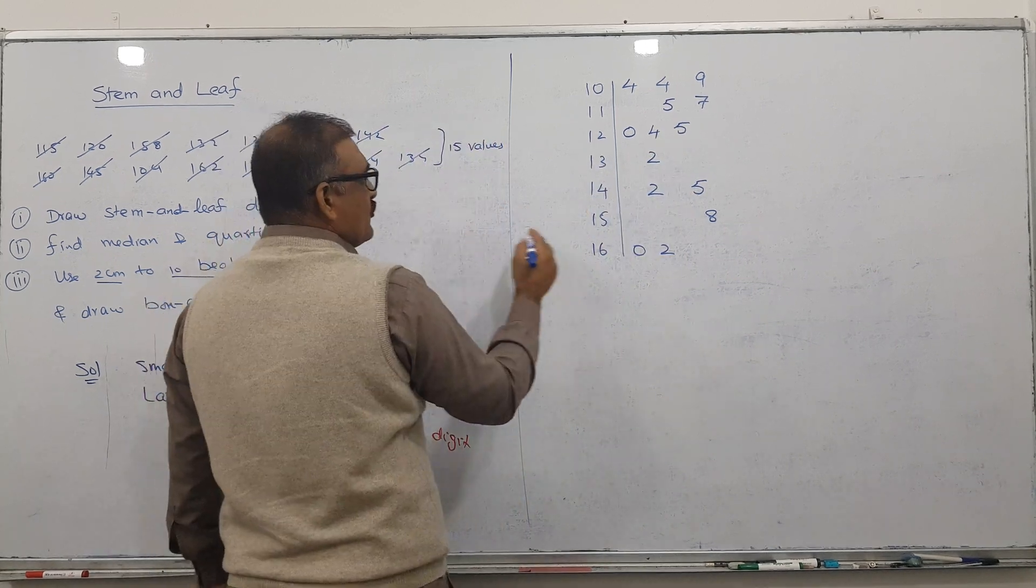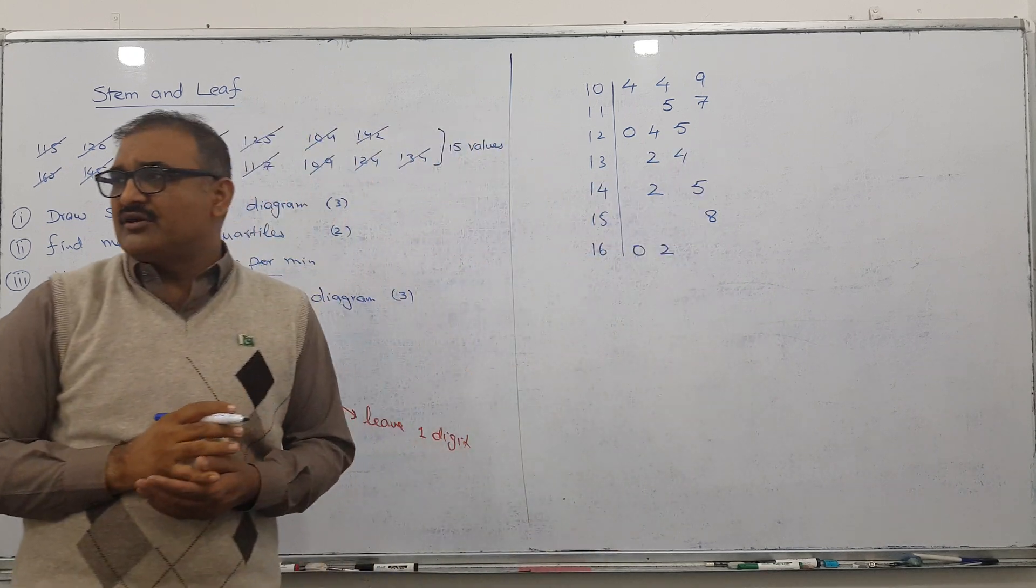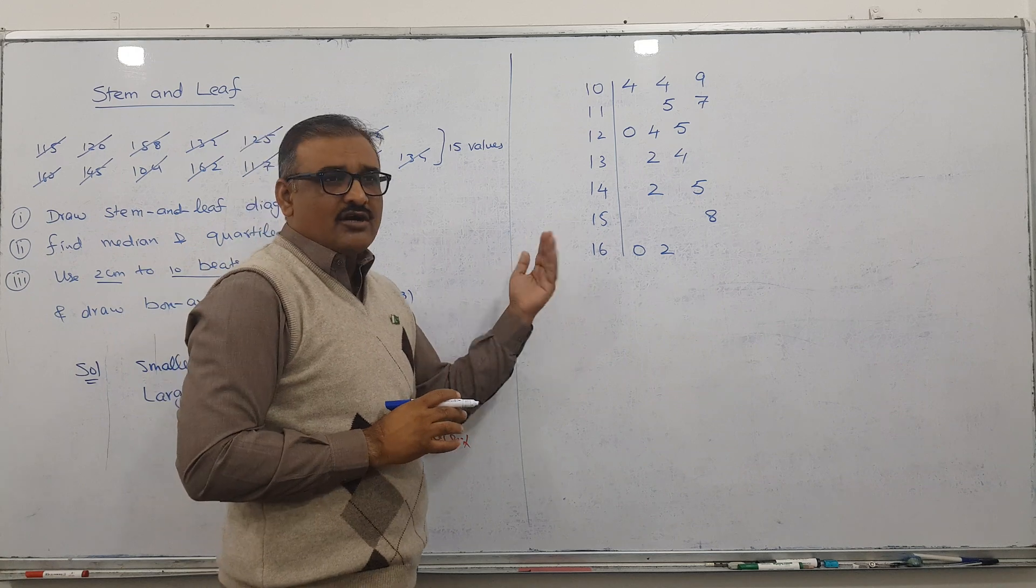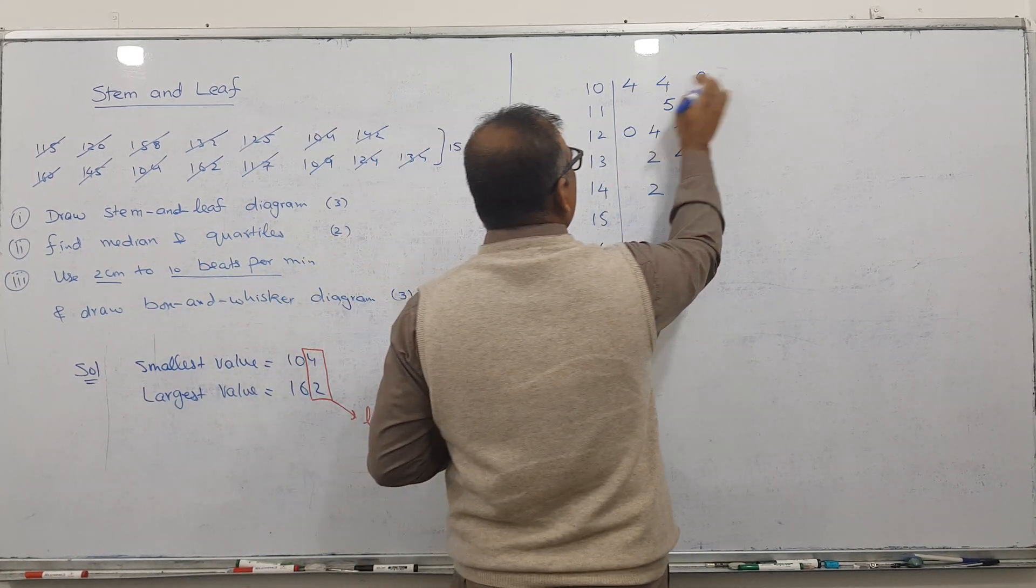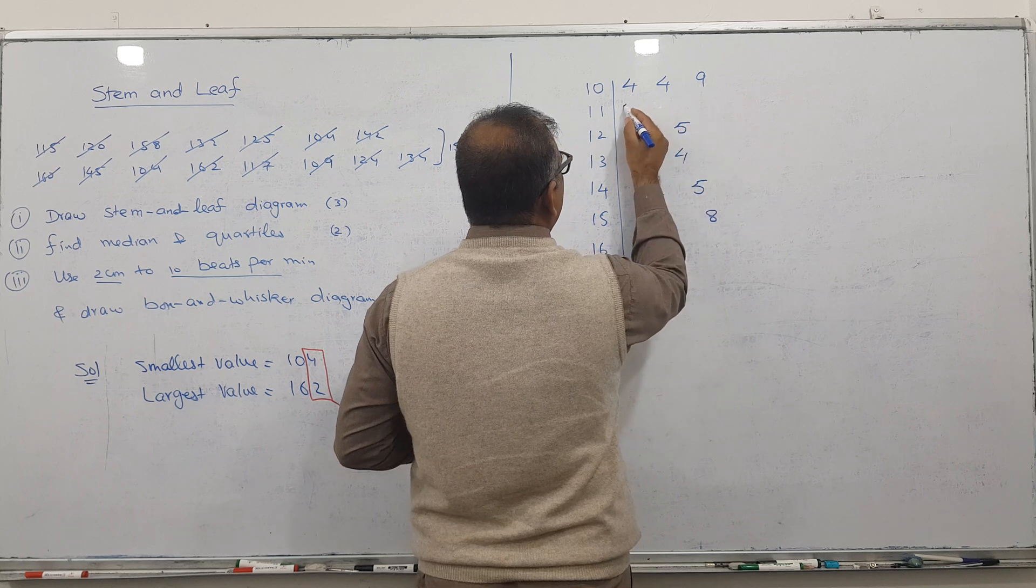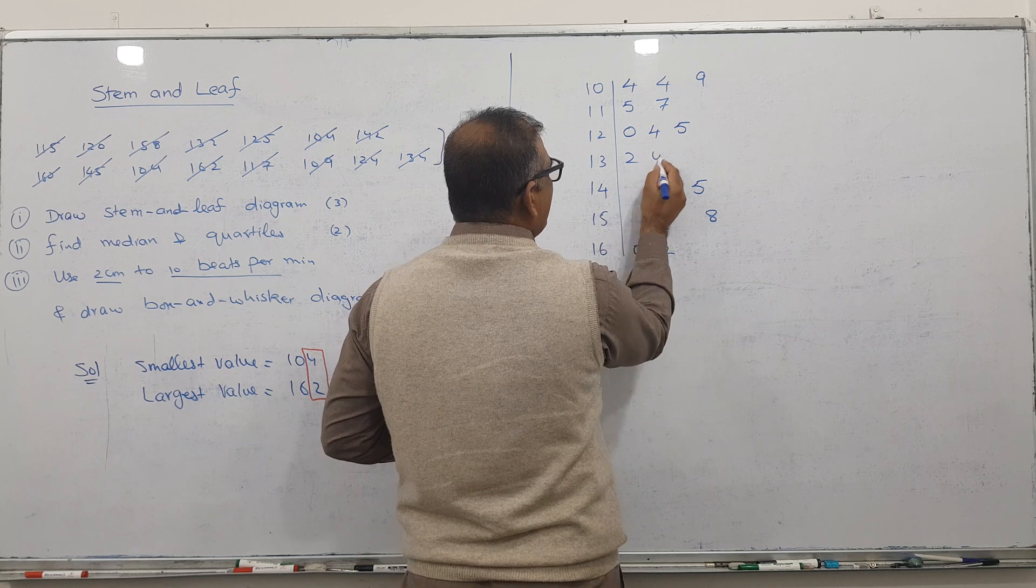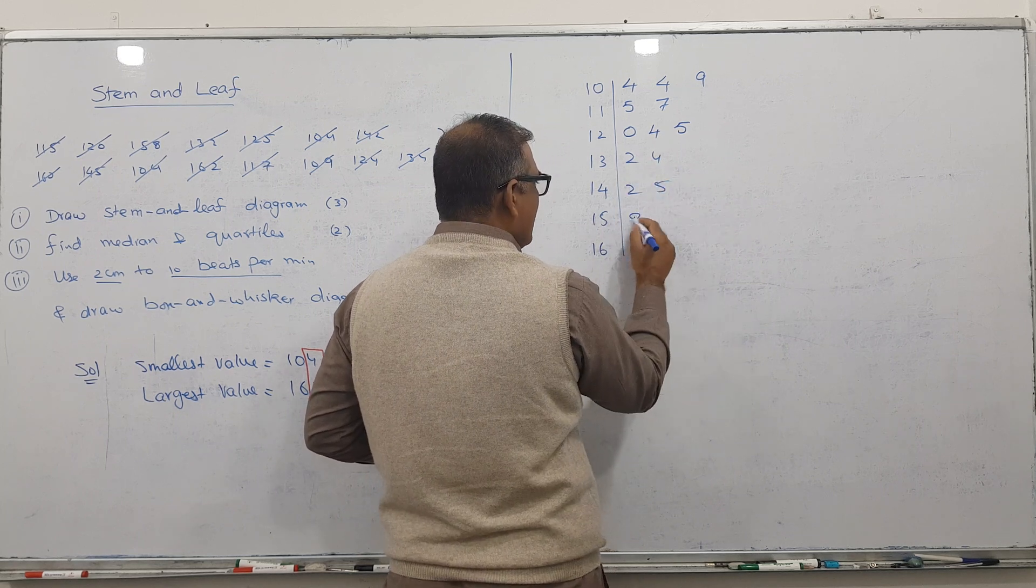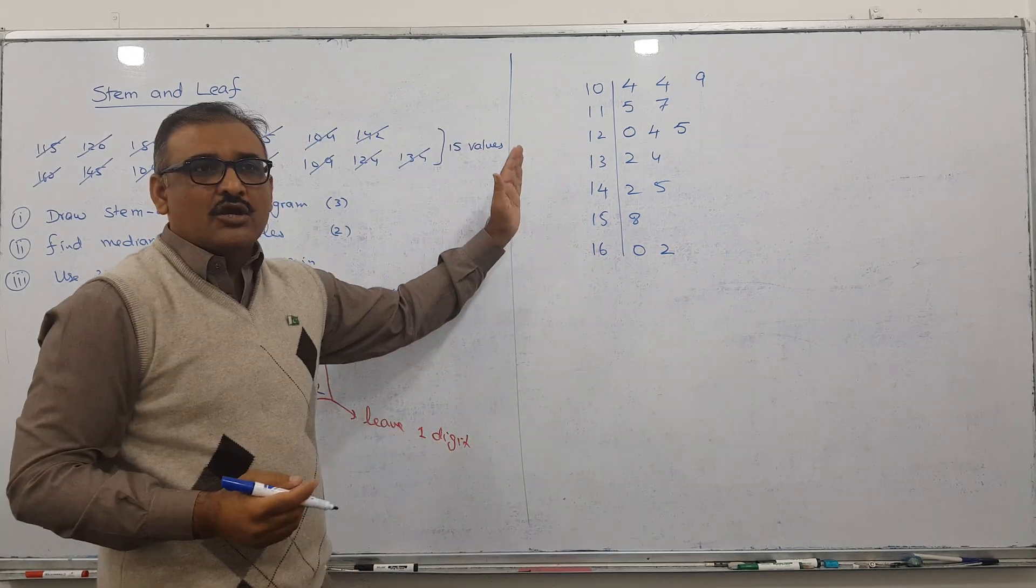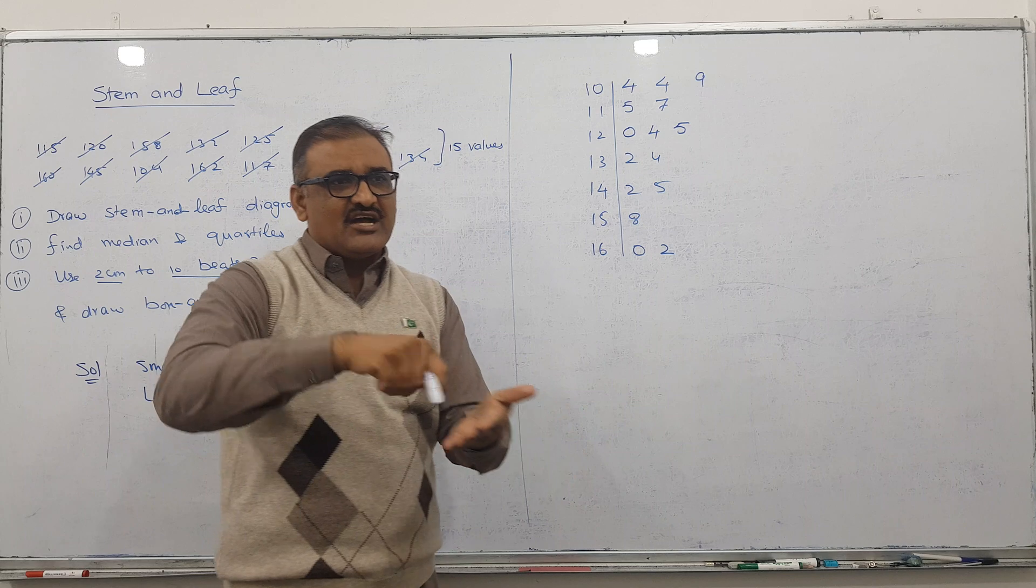134 is here. Now after writing all numbers, you should write them in order, ordered and close to the line. Like 4, 4, 9. Then 5, 7. I'm writing 5 here and 7 here. 0, 4, 5. 24, so 2 here, 4 here. 25, 2 here, 5 here. 8, so only 8, I will write close to the line. That's why you write first in pencil, because there's a chance of rubbing.